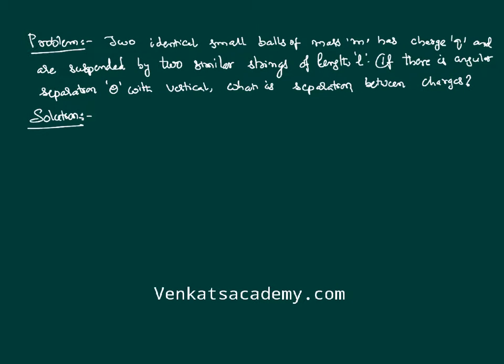Hello everyone. In this post we would like to solve a small problem based on Coulomb's inverse square law. We are assuming that there are two identical small balls, each having a mass m and each having a similar positive charge q, and they are suspended by two identical strings each of length L. The question is: what will be the separation between them in terms of the given data?